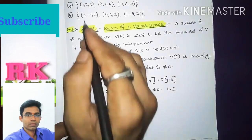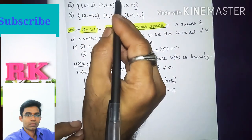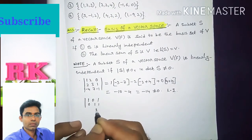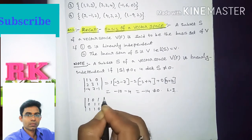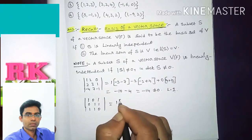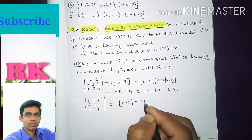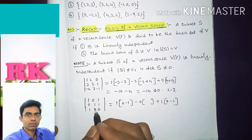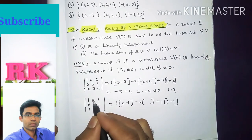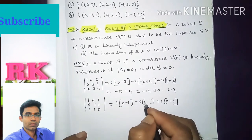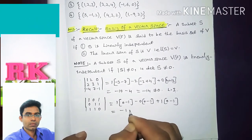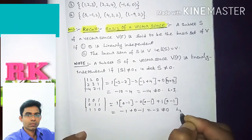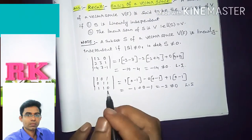Now checking Option 2: determinant of vectors {1,0,1}, {0,1,1}, {1,1,0}. The determinant value is 1×(0−1) − 0×(0−1) + 1×(0−1), which equals -1 + 0 − 1 = -2. Since -2 ≠ 0, this set is also linearly independent, so Option 2 forms a basis. Now coming to Option 3.